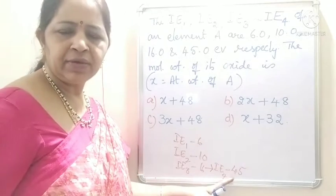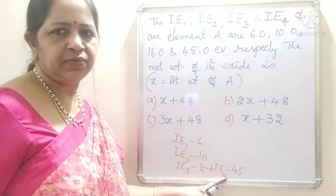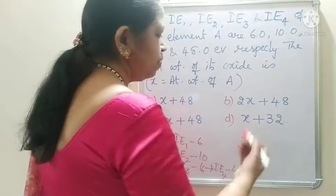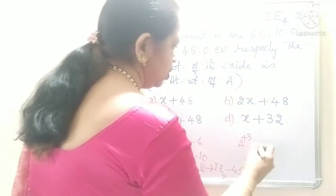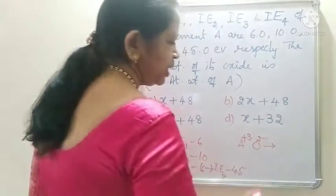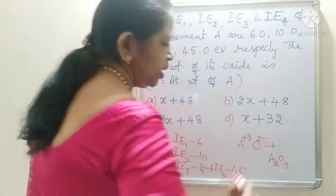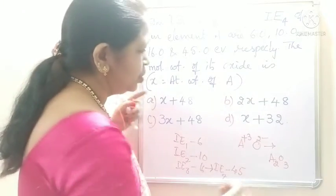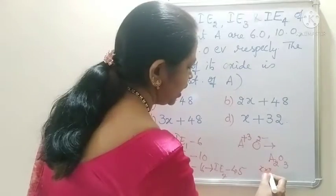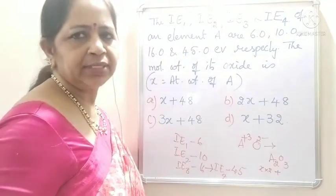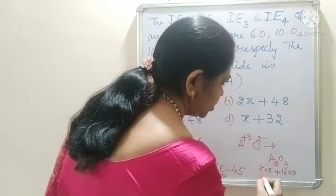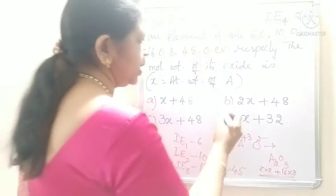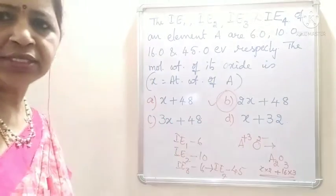There are 3 valence electrons, so the valency of element A is +3, because removing the fourth electron requires a large amount of energy. The oxide formula with A³⁺ and O²⁻ will be A₂O₃. The molecular weight: if the atomic weight of A is X, then 2 atoms of A give 2X, and 3 oxygen atoms give 3 × 16 = 48. So the molecular weight is 2X + 48. Option B is the correct answer.